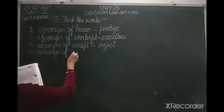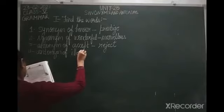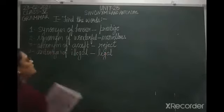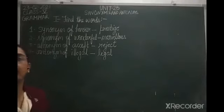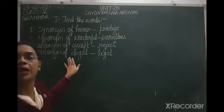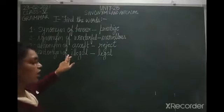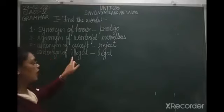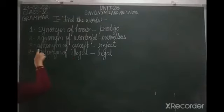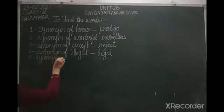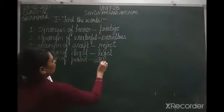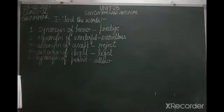The fourth one: antonym of illegal is legal. 'Ill' is a prefix added to the word 'legal' to form its antonym. Generally, prefixes are added before a word and change its meaning. The fifth one: synonym of permit is allow — A-L-L-O-W.